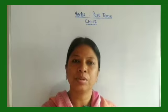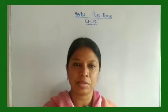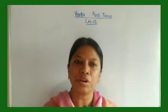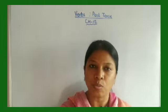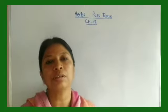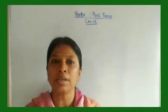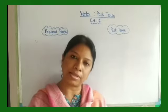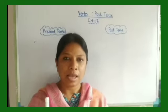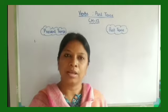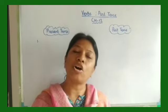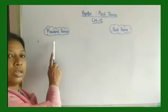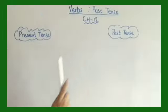Hello, my dear children of Class 2. We have already started Chapter 12, which is about verbs in past tense form. Words are action words — like play, dance, sing, walk, run. Today we are going to learn how to change words from present tense to past tense. Present tense is what we are doing right now; past tense is things which have already happened.